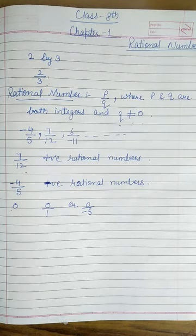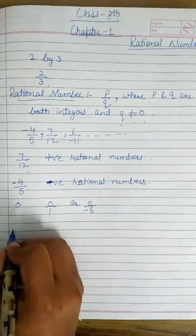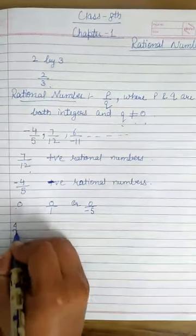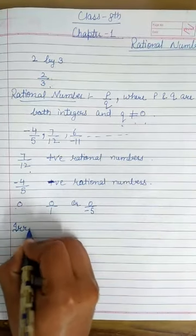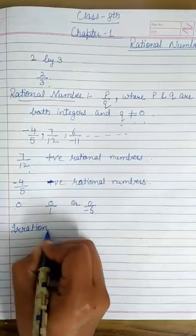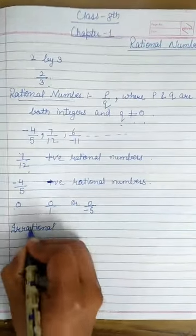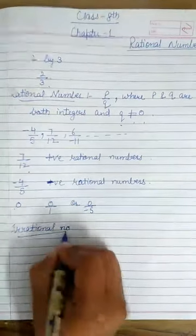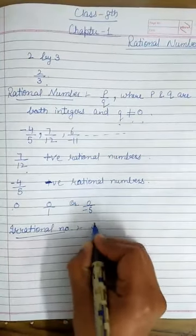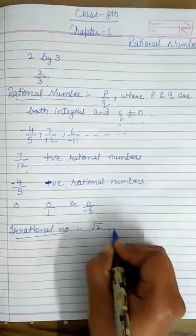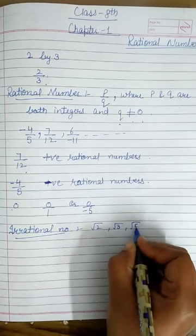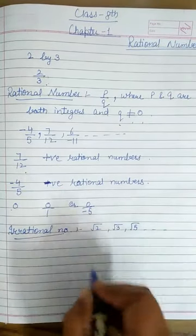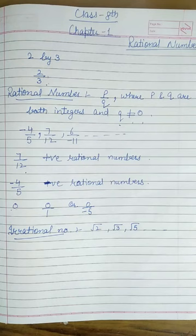Any real number that is not rational is known as an irrational number. For example, root 2, root 3, root 5, and so on. These numbers are known as irrational numbers.